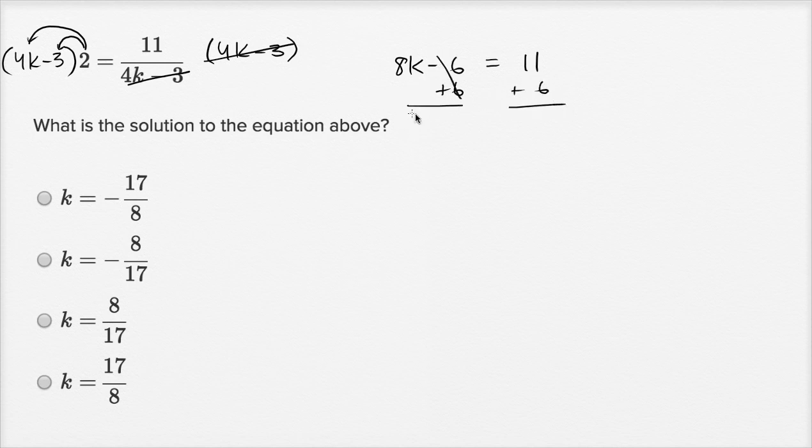And so those add up to zero. You're left with eight k is equal to 17. Now we can just divide both sides by eight, and we get k is equal to 17 over eight.